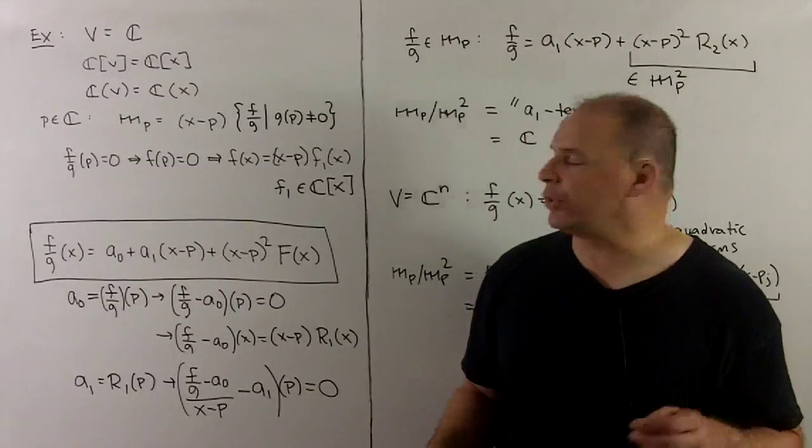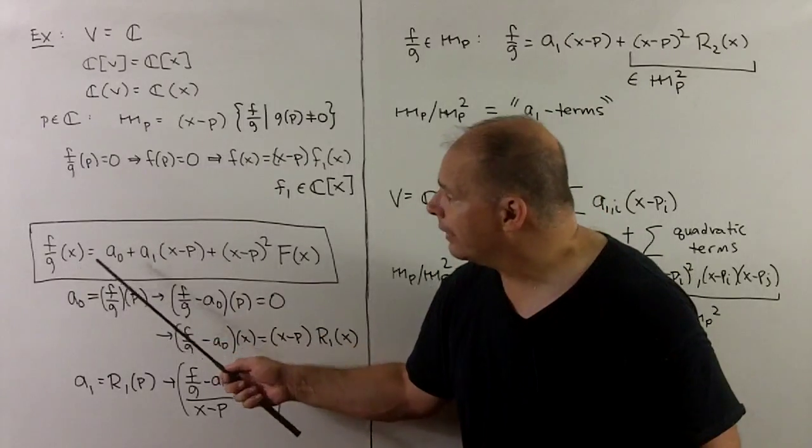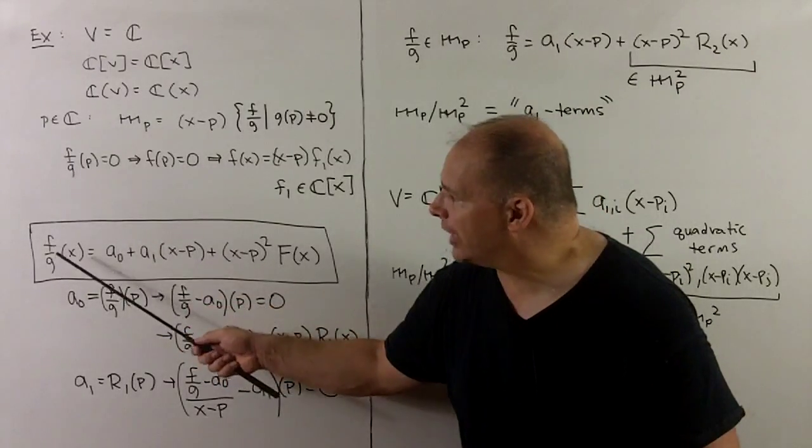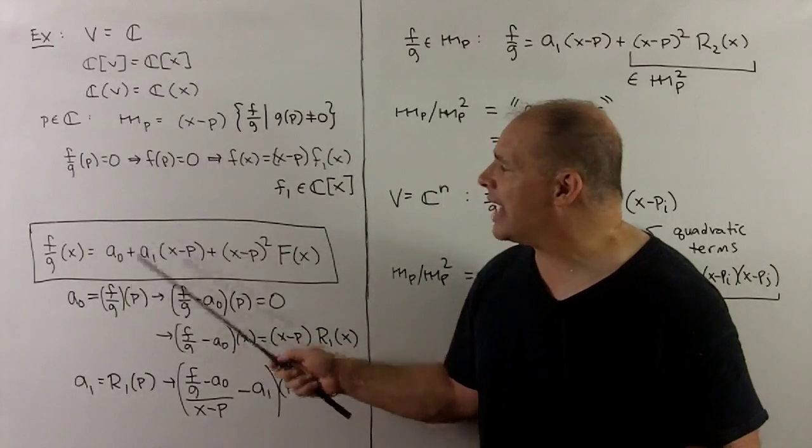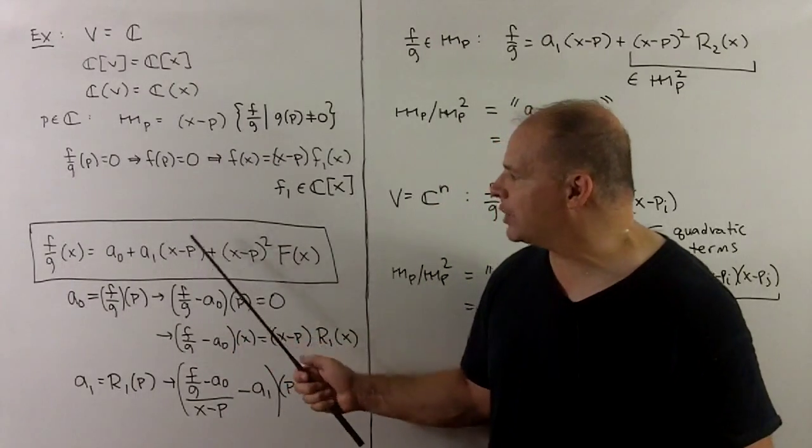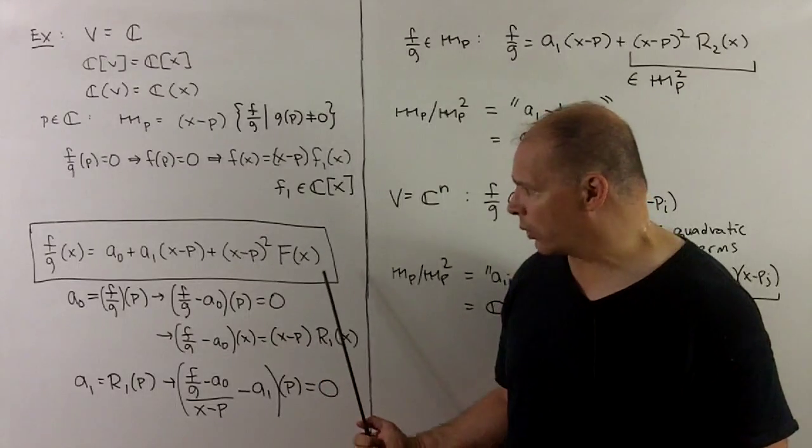With that, we're able to do a Taylor expansion of any element in the local ring. That means if we take F/G evaluated at X, G(P) is nonzero, I can write that as a₀ + a₁(X - P) + (X - P)² times another element of the local ring.